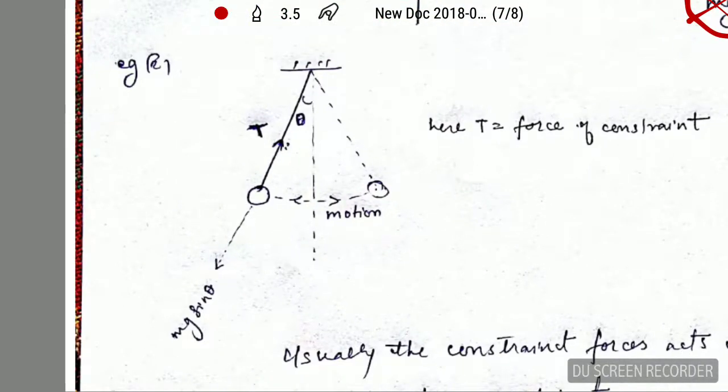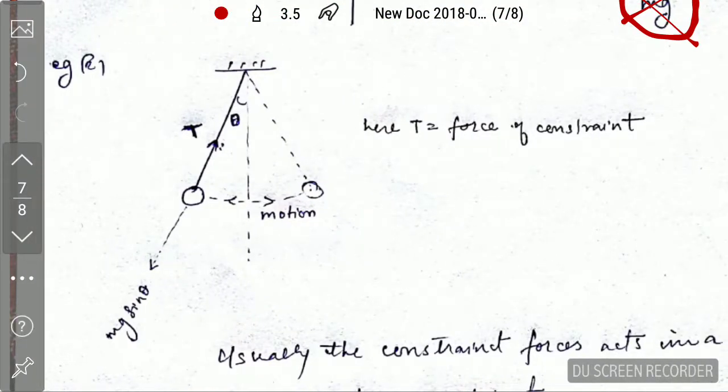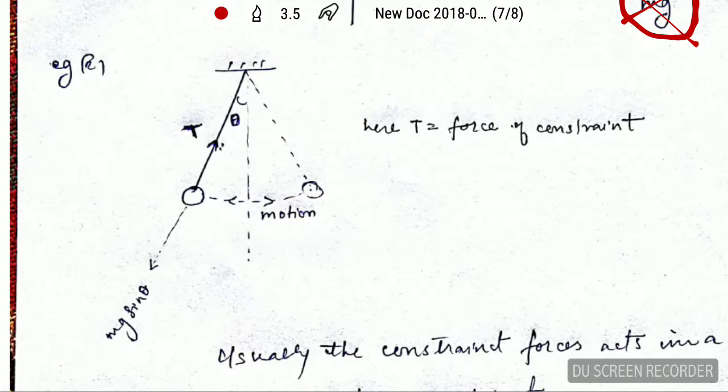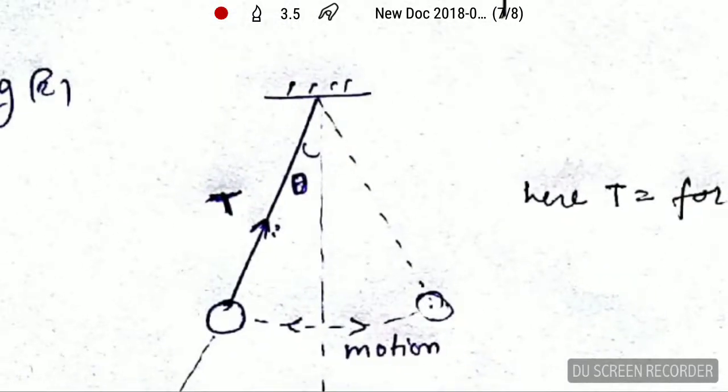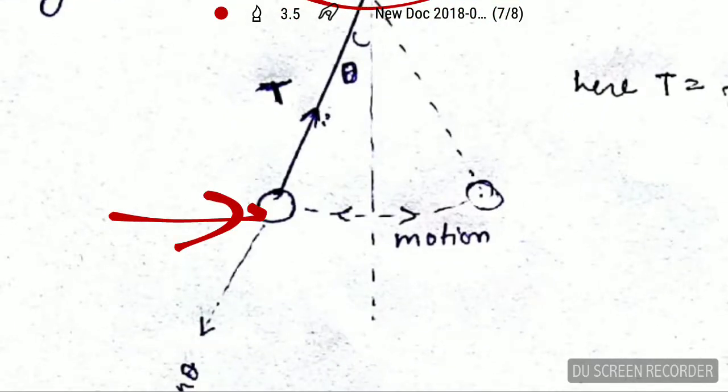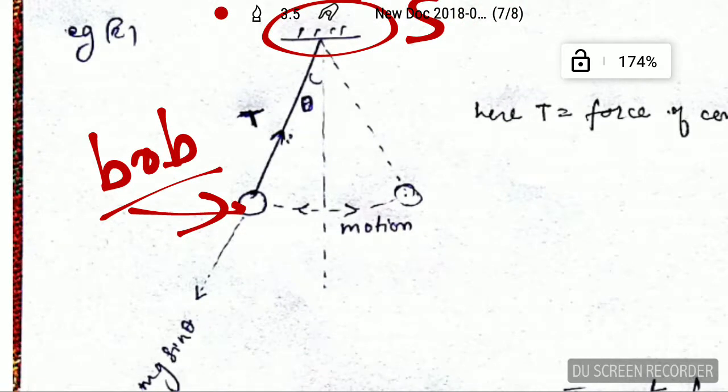This is the rigid support S, and this is the bob. This bob can oscillate, but you can see that bob can only oscillate along this path. It cannot go up and down.